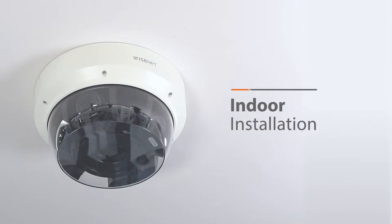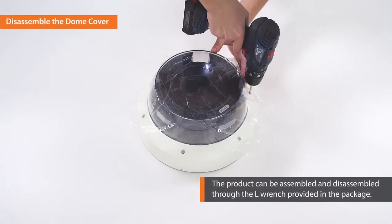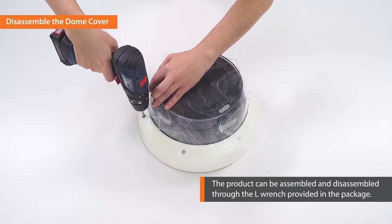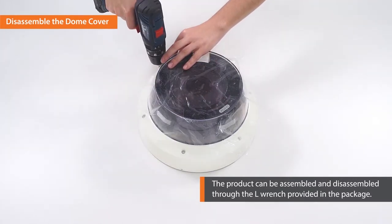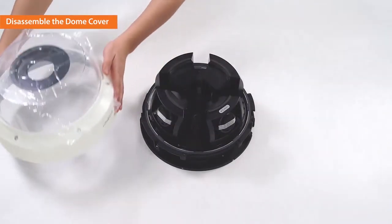Now, let's get started. First, remove the dome cover by loosening the bolts using the drill bit provided. To avoid dust getting into the cover, do not remove the protective seal until the end of the installation.